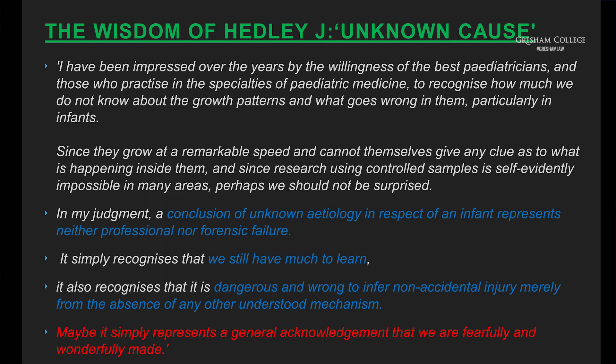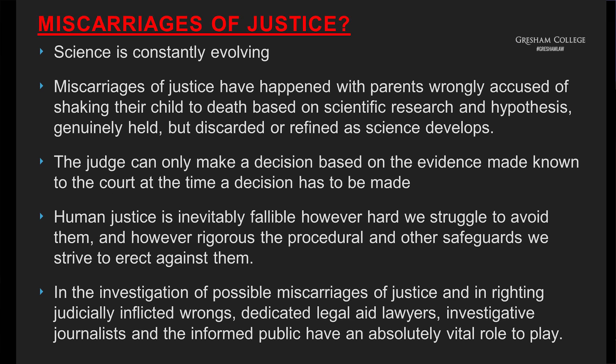Miscarriages of justice: science is constantly evolving. Miscarriages of justice have undoubtedly happened when parents have been wrongly accused of shaking their child to death, based on scientific research and hypothesis generally held by experts but later discarded or refined as science developed. The judge can only make a decision based on the evidence and expertise before him or her at the time. Human justice is inevitably fallible, however hard we struggle to avoid it and however rigorous our procedural safeguards. In the investigation of possible miscarriages of justice and in righting judicially inflicted wrongs, dedicated legal aid lawyers, investigative journalists and the informed public have a huge role to play.